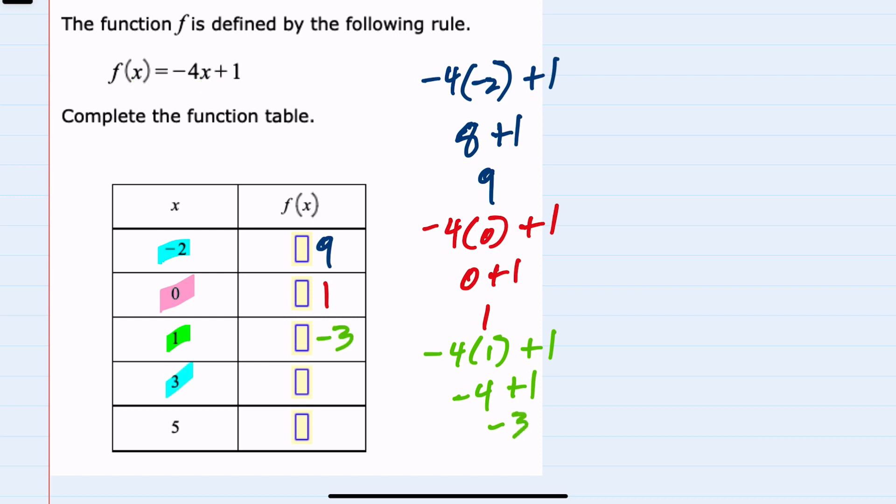Continuing to 3, f(3) means replacing x with 3. So -4 times 3 plus 1. Multiplication first is -12 plus 1, which is -11.